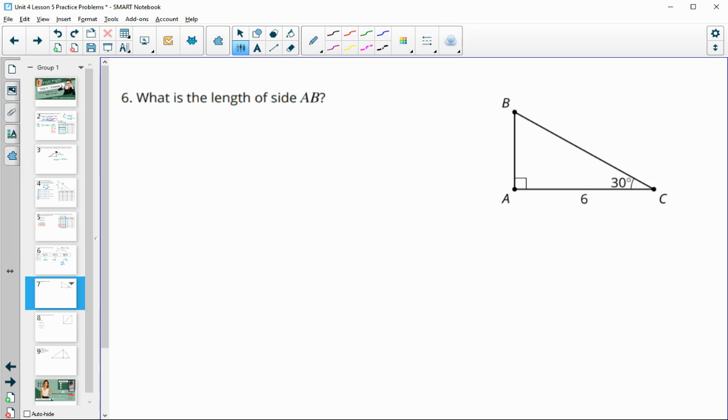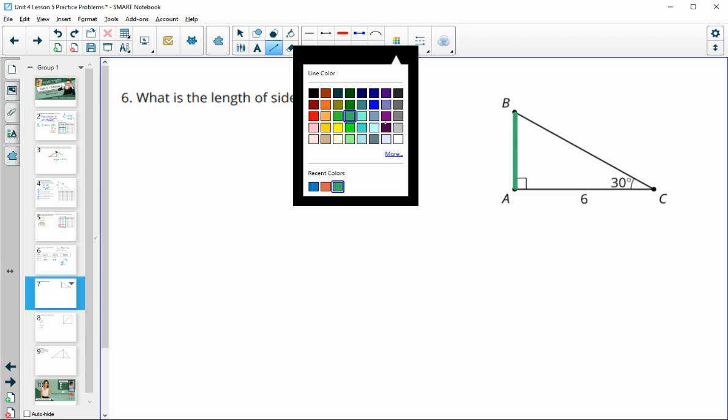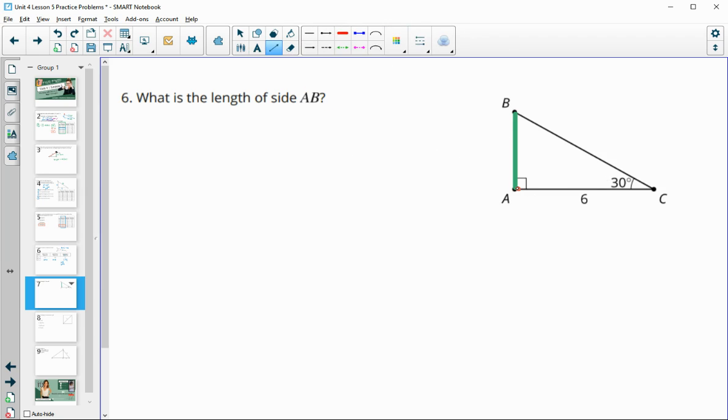Number six, what's the length of side AB? Here we're looking at a 30-60-90 triangle. You can use those right triangle tables if you want to. You can also remember that the short leg and the long leg in a 30-60-90 triangle have a scale factor of square root of 3.